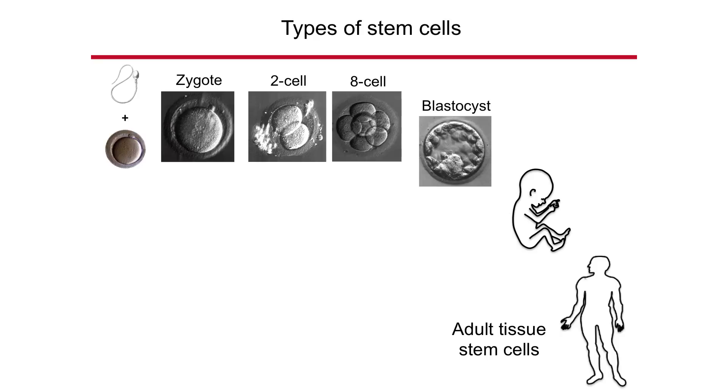Development starts when egg and sperm meet and form a fertilized egg, which we also call the zygote. This zygote divides, becomes two cells, then eight cells, and at about three to five days in the human, it forms a structure called a blastocyst — a hollow structure with some cells on the outside and some cells on the inside.